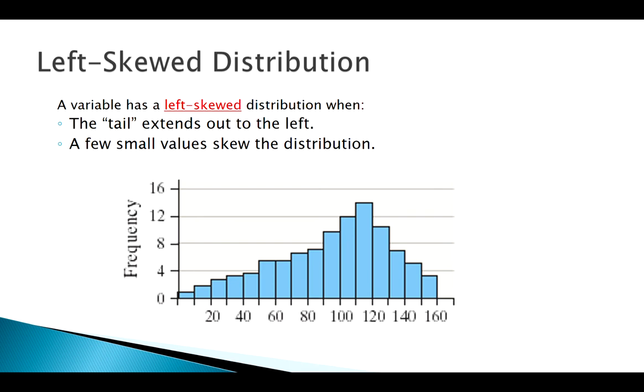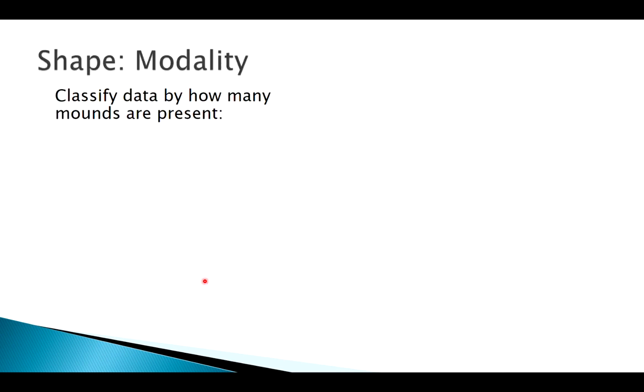Once we've established if it's symmetric or skewed, we then move on to modality. Modality has that root word 'mode' in there, so we know what the mode is. The kind of elementary definition of a mode is the most frequently occurring value in your data set, and that's useful for categorical data. But with quantitative data, especially if we have very precisely collected quantitative data, there may not even be a repeated value. We think of our mode more as where do we see kind of clustering. Clustering would be indicated on a histogram by mounds in that histogram.